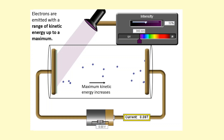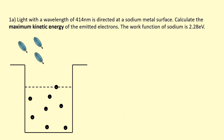Another way that we can change the maximum kinetic energy is to change the metal. We can use a metal with a lower work function, meaning the minimum energy required for the electron to escape will be lower, so it comes out with a higher kinetic energy.